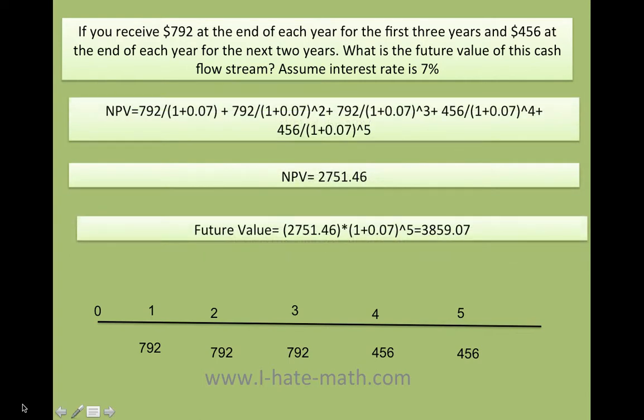We're going to go ahead and do it by hand. You can do it by hand by doing this: 792 divided by 1 plus, and then remember you have to put it in decimal because the rate is 7 percent, and you do the same for year one and then divided by year two, three, four, five. You can see here what I'm doing is just the sum of all the present values of every single cash flow. Doing that by hand, and of course I'm going to show you how to do it with the TI-84 and Excel, we get $2,751.46.